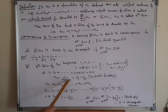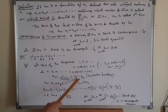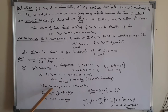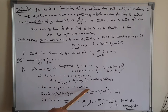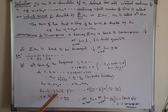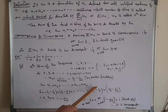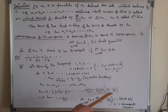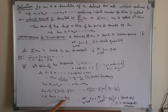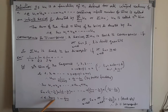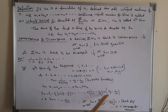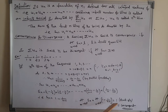We simplify 1/(n(n+1)) using partial fractions as 1/n − 1/(n+1). Therefore Sn equals (1 − 1/2) + (1/2 − 1/3) + ... + (1/n − 1/(n+1)), which telescopes to Sn = 1 − 1/(n+1). Applying the limit: limit as n→∞ of Sn equals limit as n→∞ of (1 − 1/(n+1)), which equals 1, a finite quantity.